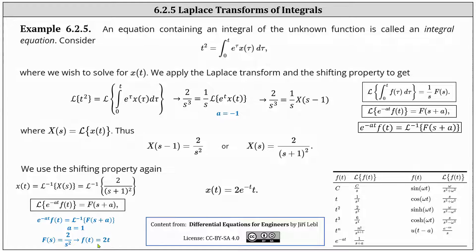Putting all the pieces together, the inverse Laplace transform of two divided by the square of the quantity s plus one is equal to e to the power of negative at times f(t). Here, e to the power of negative at is e to the negative t, and f(t) equals two t. Therefore, x(t) equals two t e to the negative t. I hope you found this helpful.